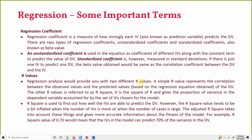R-square is the square of R, the correlation coefficient. It gives the proportion of variance — how much change in the dependent variable can be accounted for by the independent variables. R-square is used to find out how well the IVs are able to predict the DV.